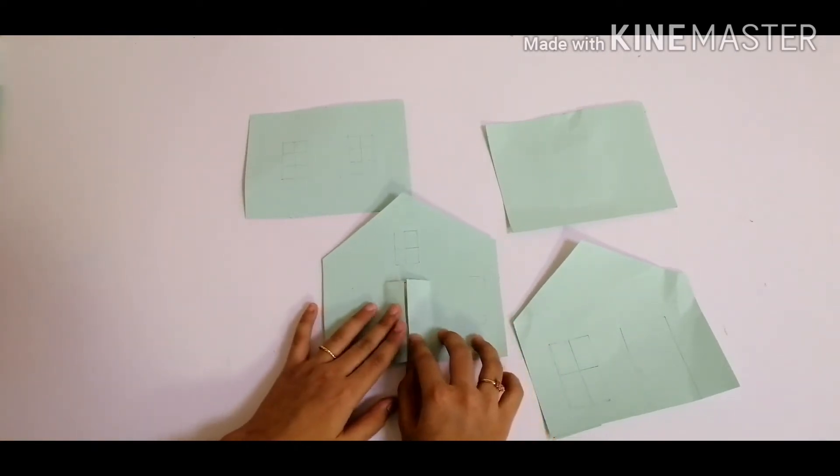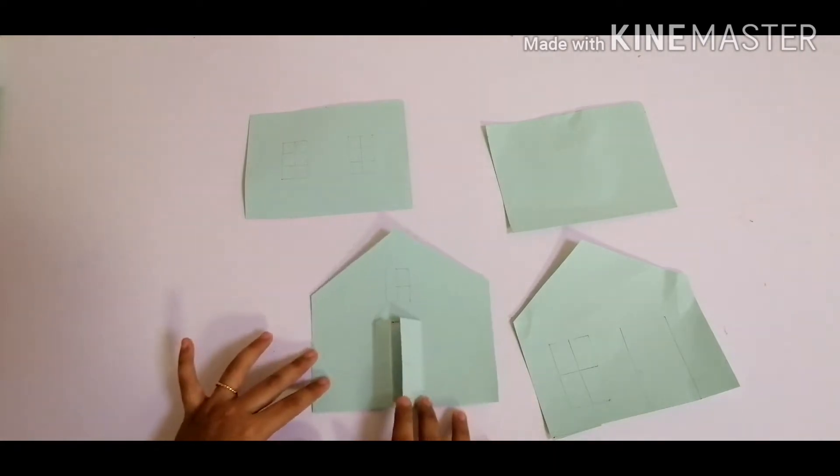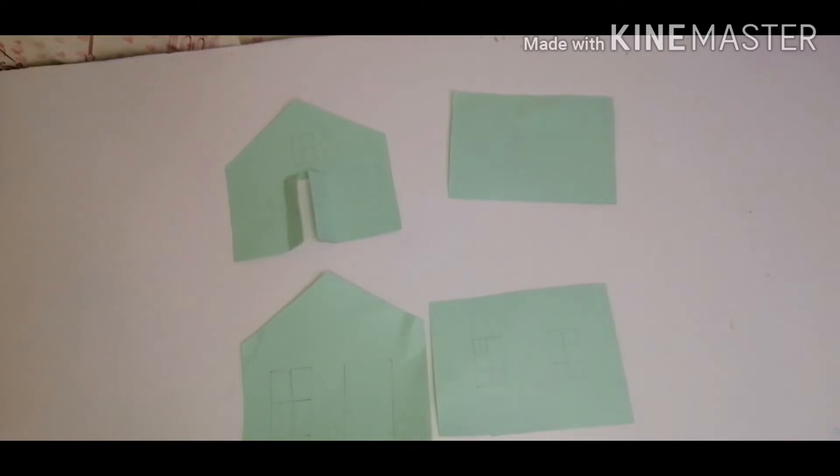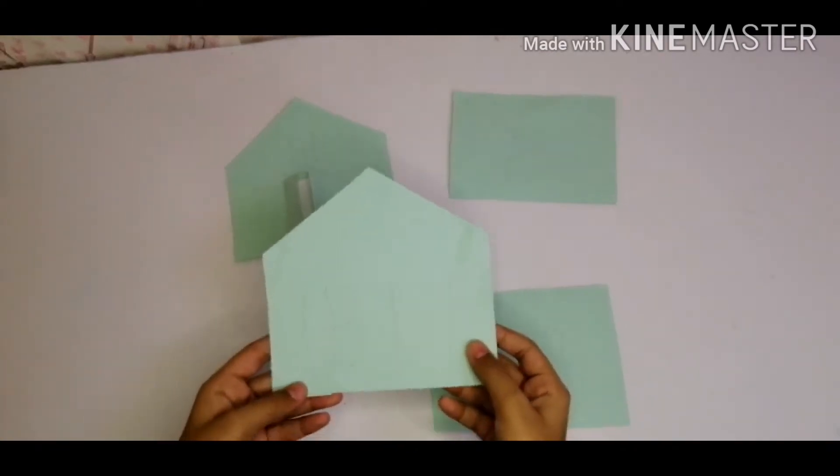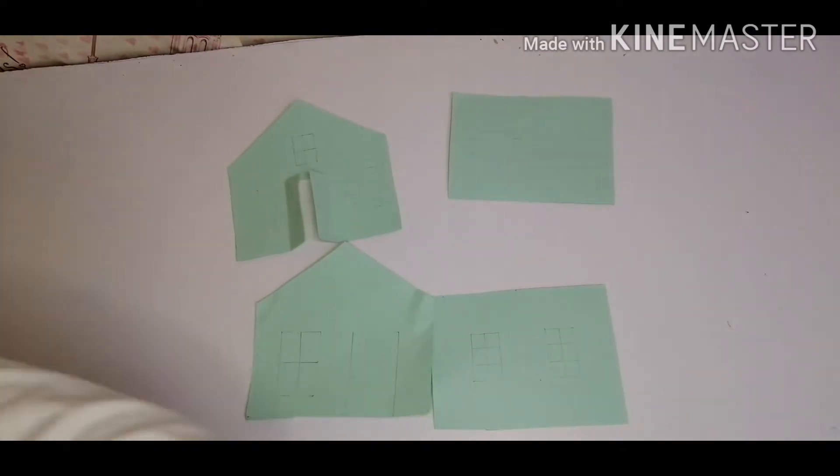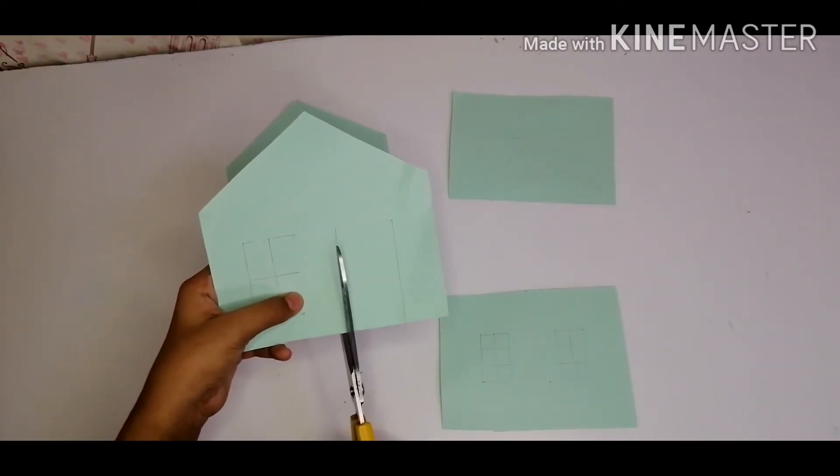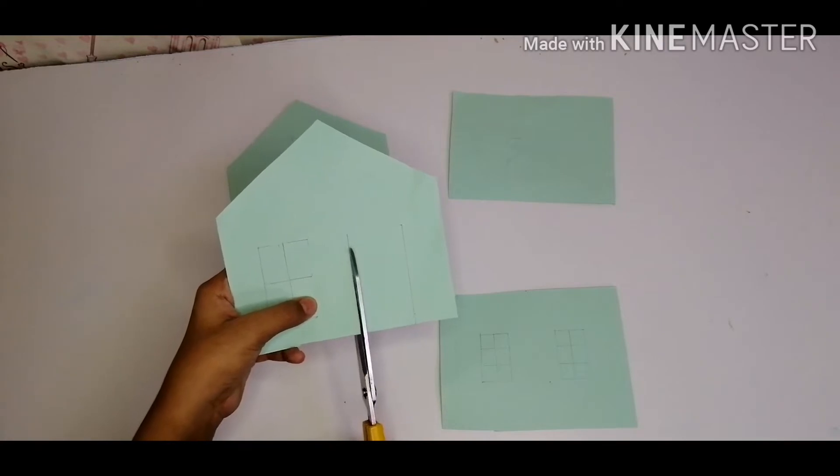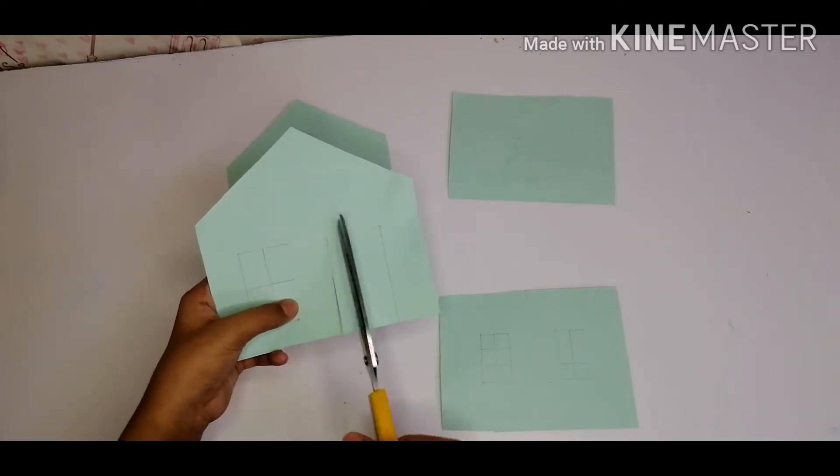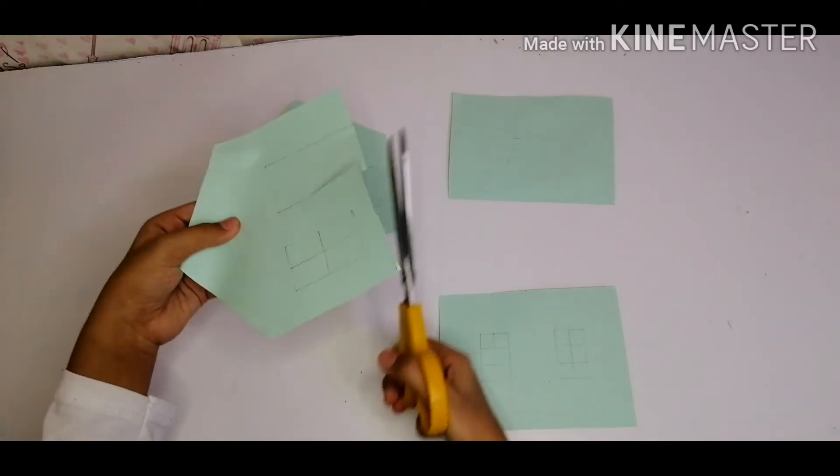Now we are going to cut the back side door. Repeat the step, we will cut it from this side and just from the upper side.